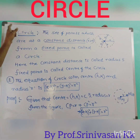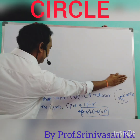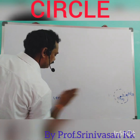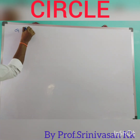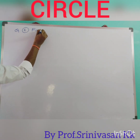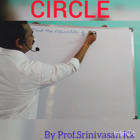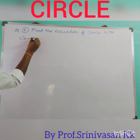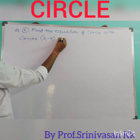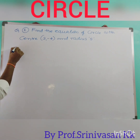The circle definition is given and I derived the equation for a circle. Now I am going to discuss an example for finding the equation of a circle. Question number one: Find the equation of a circle with center (3, -4) and radius 5.